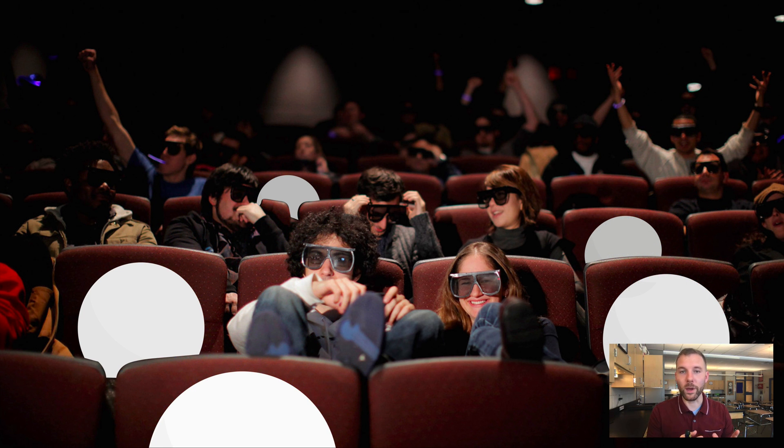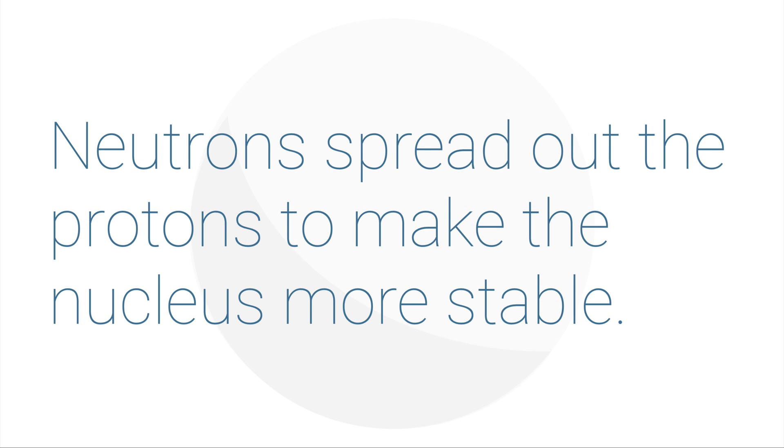If you think about it for a little bit, they're all positive, they're shoved in the center. Like charges repel, so they'll want to get away from each other unless there's something that's creating a buffer, and that's what neutrons do. So a neutron helps to spread out the protons to make the nucleus more stable.